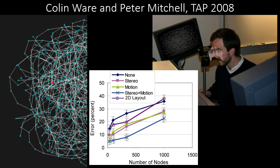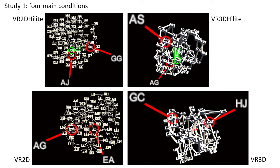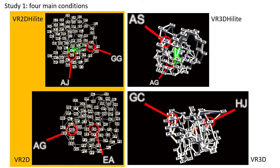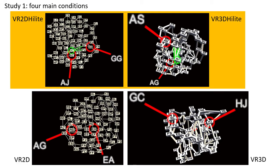It was unclear if 3D would retain its advantage under conditions closer to real-world interfaces. Our first study involved four conditions that are more relevant to virtual reality platforms. We allowed users to control their point of view using the motion of their head and of their non-dominant hand. Our 2D layouts were computed with edge routing, which reduces occlusion of edges and nodes. Half of our conditions also allowed the user to interact with the network by moving a mouse with their dominant hand, highlighting edges incident on the node under the mouse cursor.